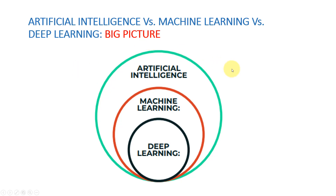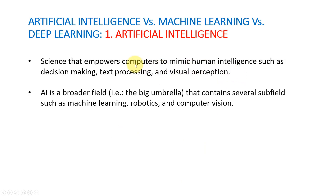Let's dig deeper and look at the definition of each element. Artificial intelligence is a science that empowers computers to mimic human intelligence, such as decision-making, text processing, and visual perception. The overall idea is that we observe how humans think and make decisions, and we want to mimic that artificially. AI is the broader field — the big umbrella that contains subfields including machine learning, robotics, and computer vision.